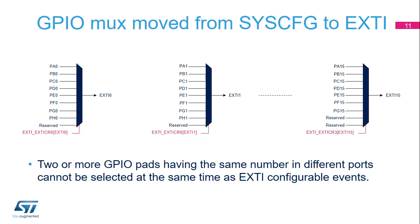The STM32L5 has 8 IO ports. Ports A to G are 16-pin wide; Port H is 3-pin wide. Each of the 16 EXTI configurable events related to GPIO ports has an independent multiplexer. The EXTI multiplexer outputs are available as output signals from the EXTI block to trigger other IPs, independently from any mask defined in the EXTI_IMR and EXTI_EMR registers.